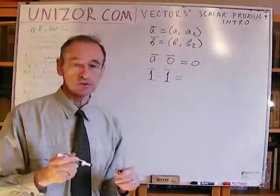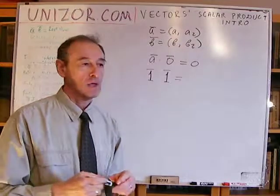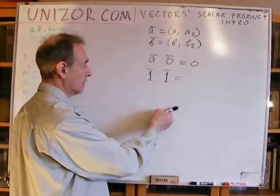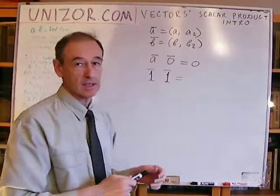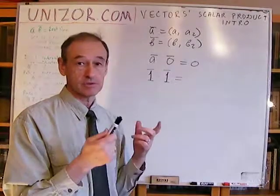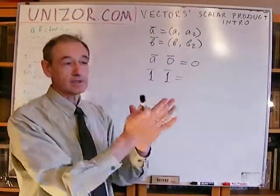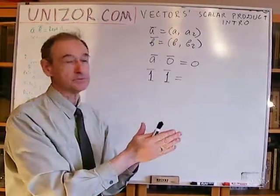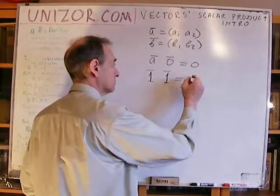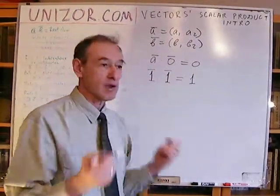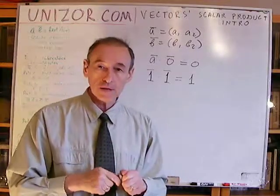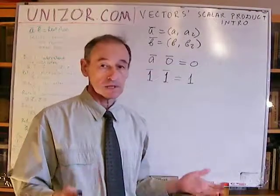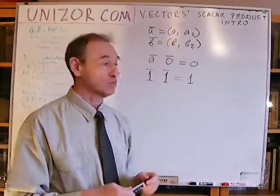Rule number three: if you have the same unit vector — a vector with unit length — multiplied by itself using the scalar product, then the result must be one. It is very reasonable to expect that a vector of length one multiplied by itself gives a result equal to one.